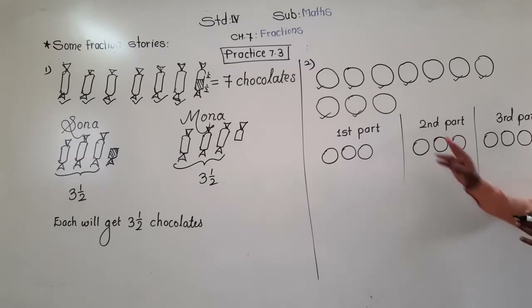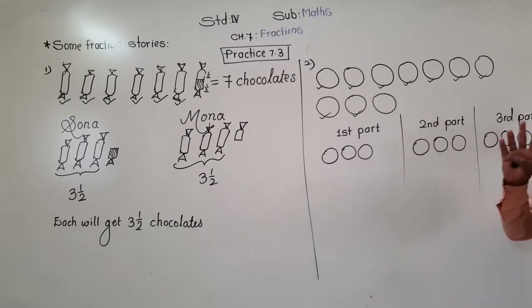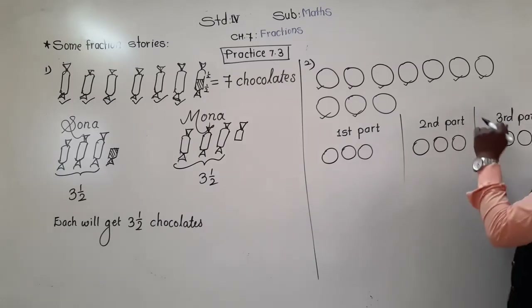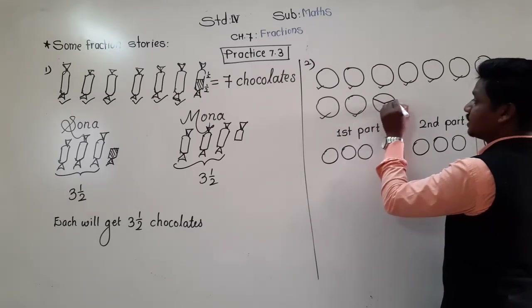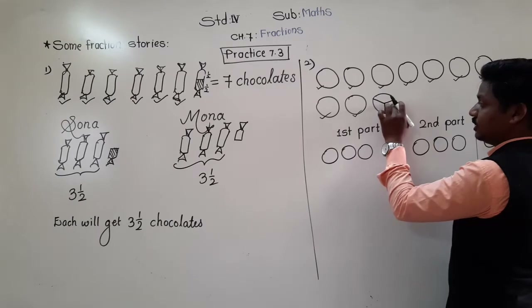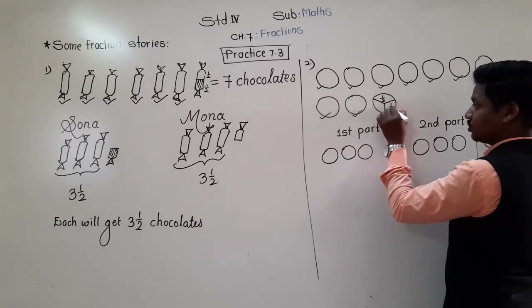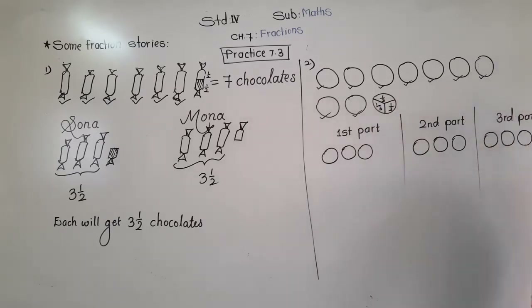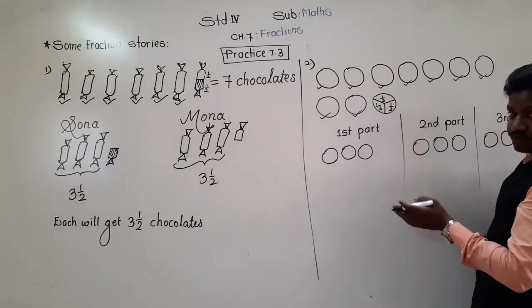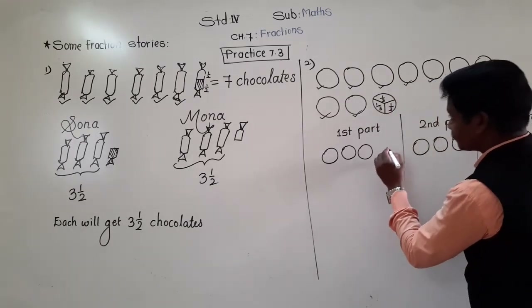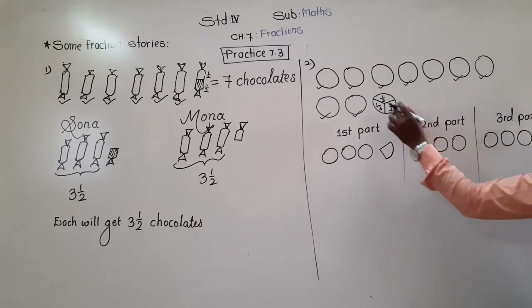This 1 chapati I have to divide equally into 3 parts — I can't just put it in the 1st part because then the 1st part would have 4 and the others only 3. So I cut this last chapati into 3 equal parts. Each part is called 1/3 because it is divided into 3 equal parts, so each part is 1 out of 3.